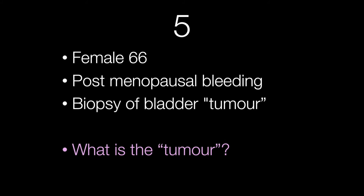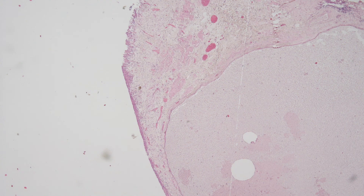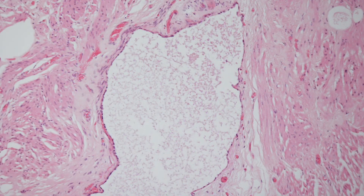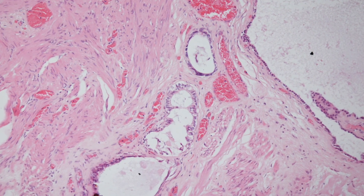Question number five is a bit more tricky. This is a female of 66 who presented with postmenopausal bleeding, and a biopsy was taken of the bladder tumour. What is the tumour? Here are a number of different fields of the lesion.